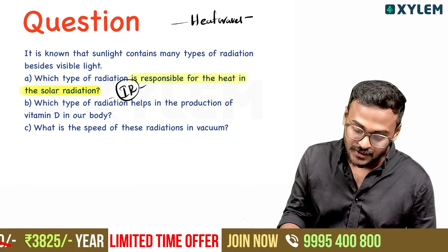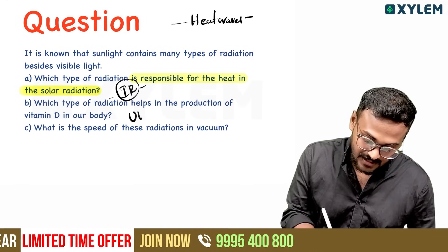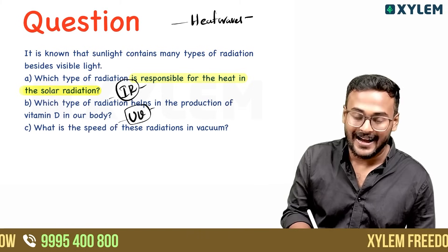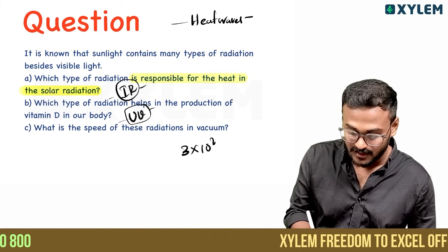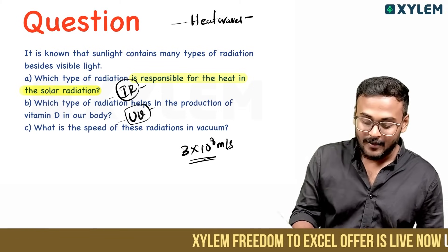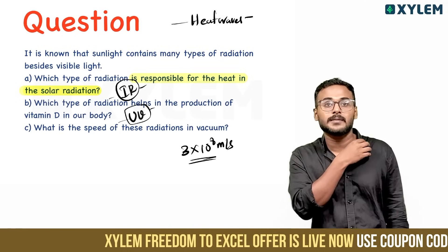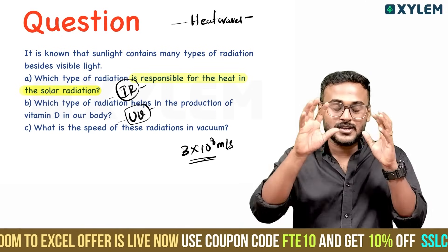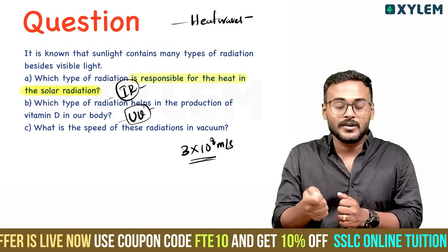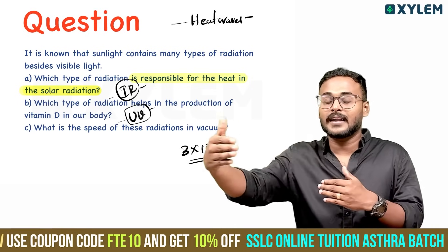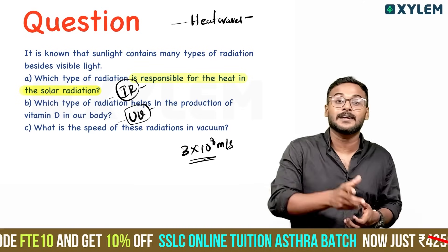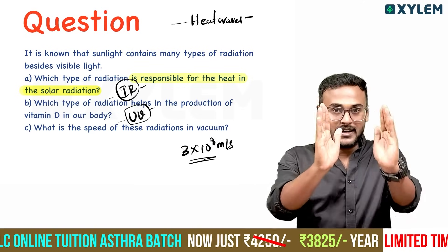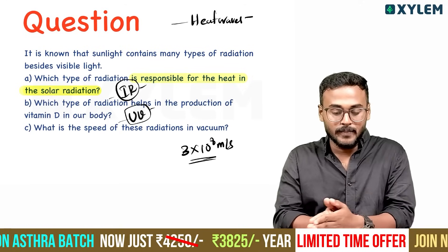Which type of radiation helps to produce vitamin D? Vitamin D is produced by ultraviolet radiation. What is the speed of radiation in vacuum? The speed of radiation is 3 × 10⁸ meters per second. You can see applications such as night vision cameras, infrared remote switches, and many different kinds of things.